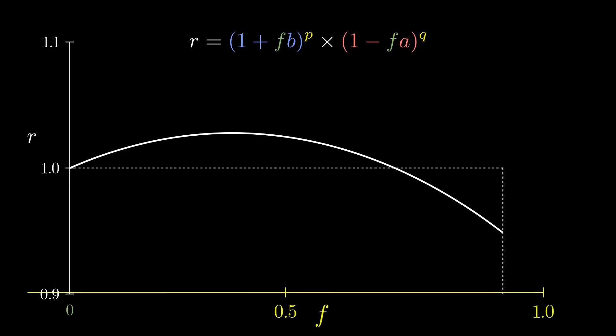The x-axis represents the fraction of wealth bet. The y-axis represents the mode growth rate. When f equals 0, we're not betting anything, so there's no change in wealth, and our growth rate is 1. When f equals 1, we're betting our entire wealth, and we're making a loss. So our growth rate is 0.949.